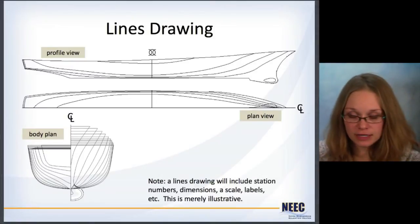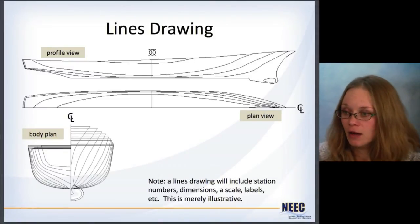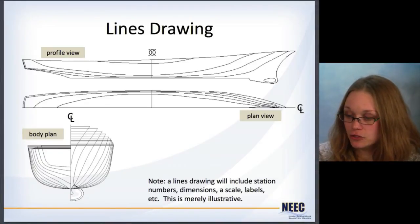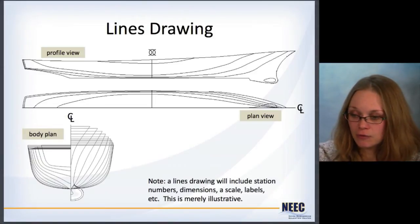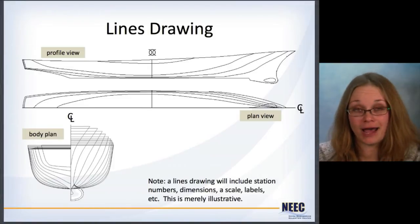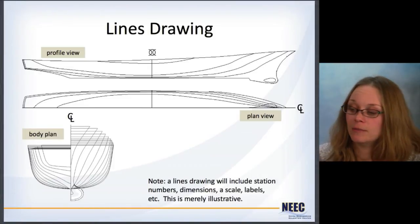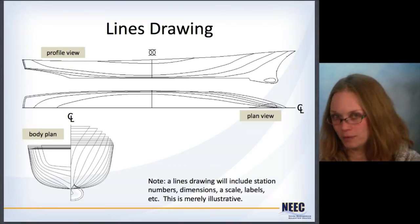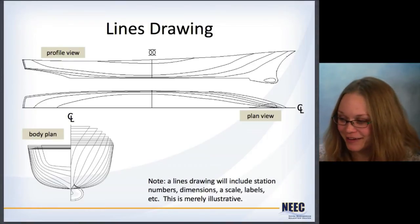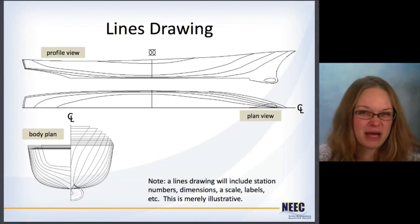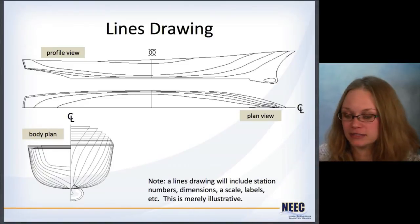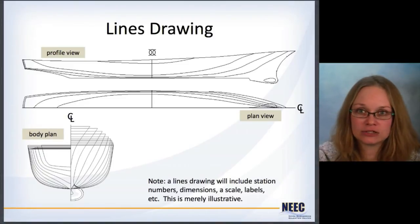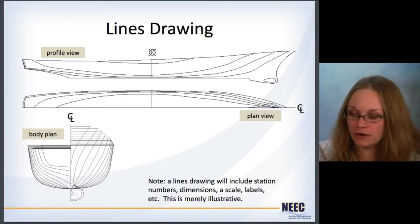You can take all of these lines and put them all together in something called a lines drawing. The profile view at the top shows the buttock lines, the plan view shows the water lines, and the body plan shows the stations. Remember that the body plan shows the stations that are forward of midships on the right and the stations that are aft of midships on the left. In general, a lines drawing is going to have a whole bunch more information than just what I've shown here — station numbers, dimensions, scales, labels, and so on. This is just an illustrative example to show you where these lines are coming from.